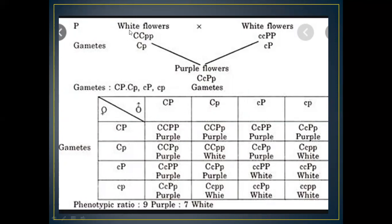If only one allele is dominant — for example, here the C is dominant but only the P is dominant — the color of the flower is white. However, when both dominant genes come together, they complement each other and the color of the flower becomes purple.